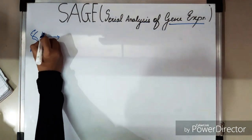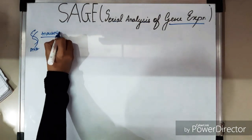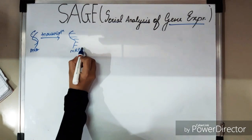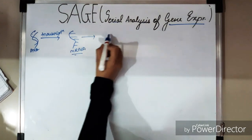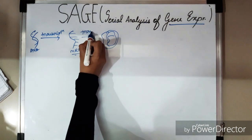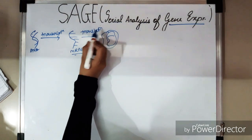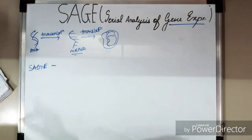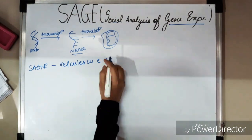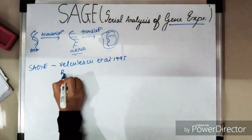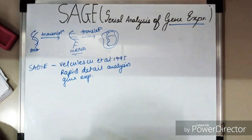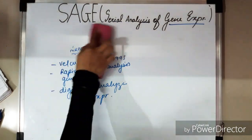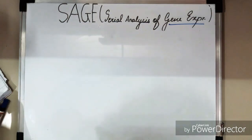To recap: gene expression is a process by which information from one gene is used to synthesize a functional gene product — commonly a protein. SAGE is a rapid and detailed analysis of overall gene expression that provides quantitative expression profiling of a given cell. It was discovered by Velculescu et al. in 1995.